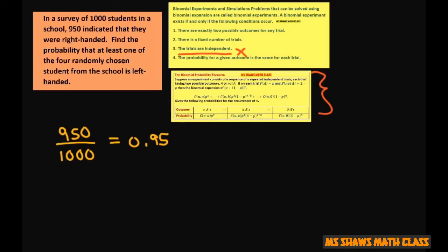The probability of the second student being right-handed is either 949 divided by 999 or 950 divided by 999, and that's depending on whether the first student is right-handed.